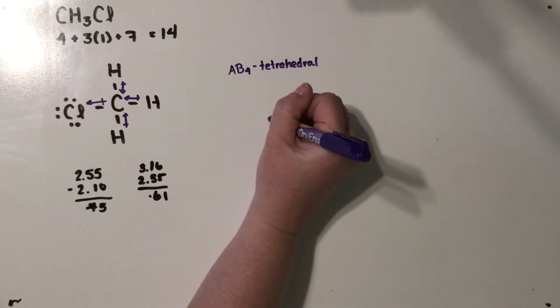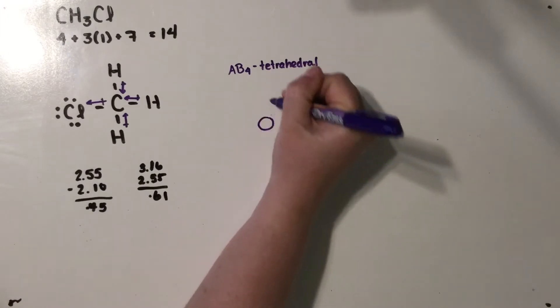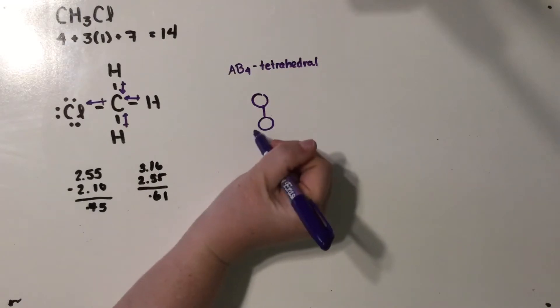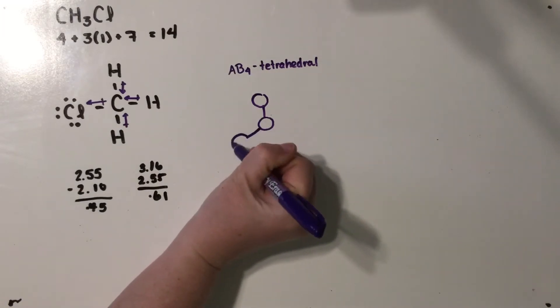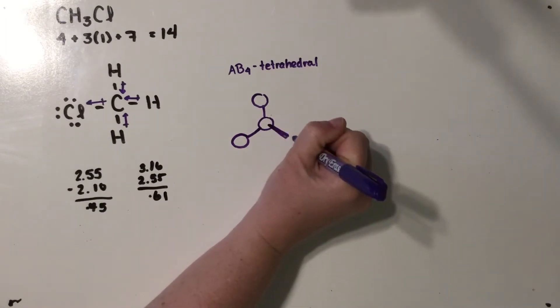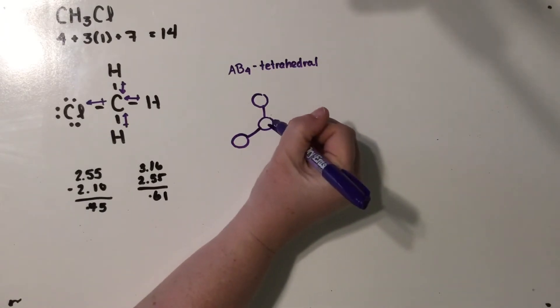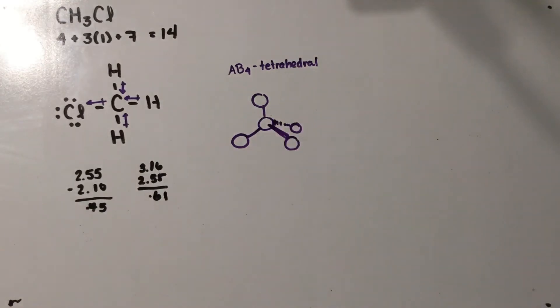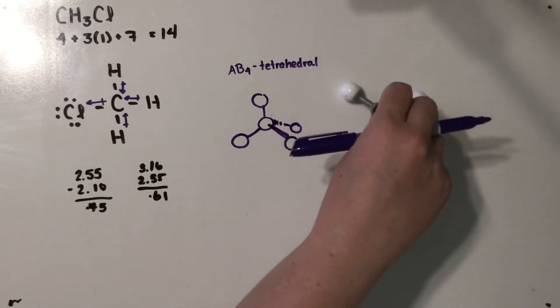So if you remember back to your Chem 1 days, tetrahedral shapes are drawn so that these two, along with this guy here, are on the same plane. This atom is coming out of the paper at you, and then this one is going back behind. It really looks like this guy.